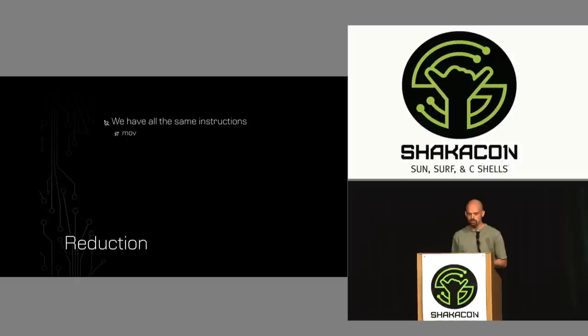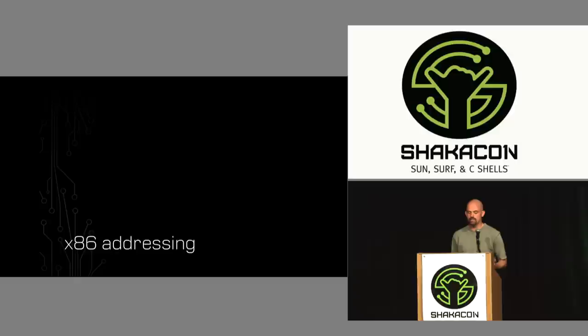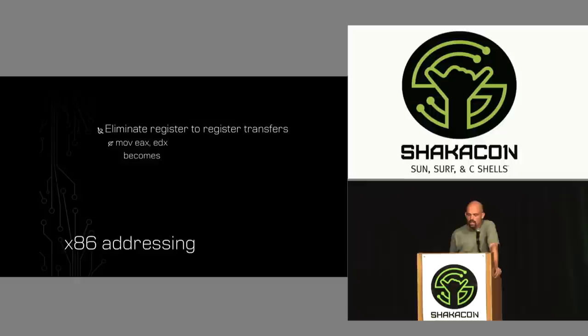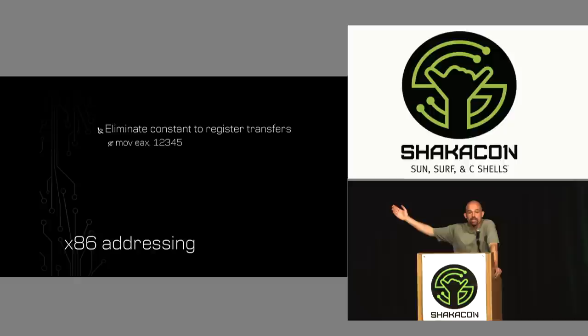Right now all our instructions are move instructions, but they're not all really the same. x86 has many different types of move instructions: register-to-register transfers, one-byte writes from a register into memory, loading immediate values or constants into registers, and really complex addressing forms. To simplify further, we can get rid of register-to-register transfers. This instruction copies the EDX register into EAX. We rewrite it by moving EDX into a scratch location in memory, then reading from that scratch location into EAX — still copies EDX into EAX, just via memory transfers instead.